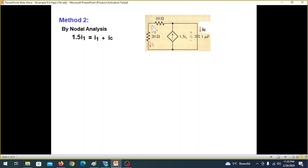Now in this circuit we can write the nodal analysis. The current entering is equal to current leaving. That means 1.5 I1 is equal to I1 plus IC.